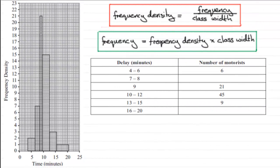In this first question we're given a histogram about the delay in minutes for various motorists and we've got to fill in these two rows. To do this, we need to remember that frequency density is equal to frequency divided by class width. Rearranged, frequency equals frequency density multiplied by class width, which is fundamentally the area of each of these blocks.